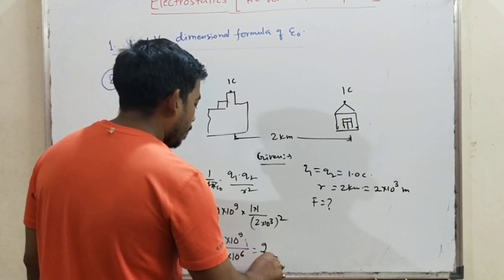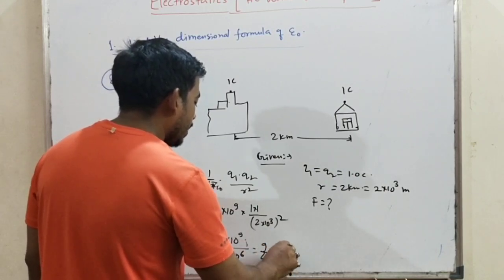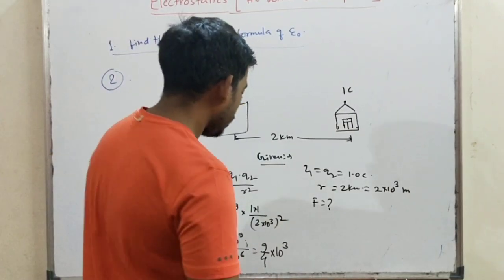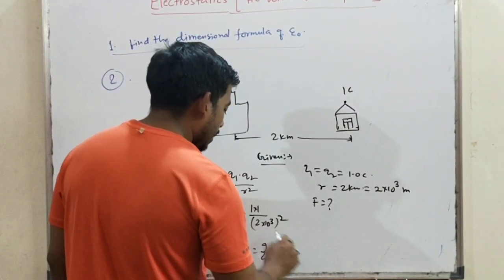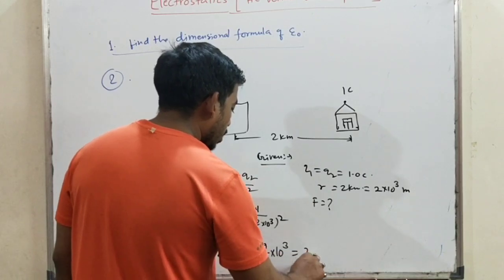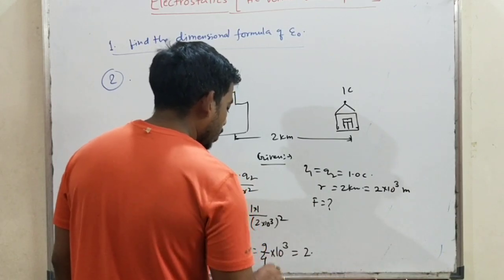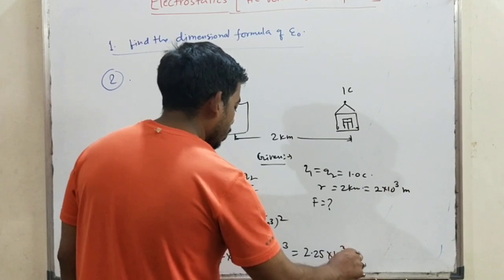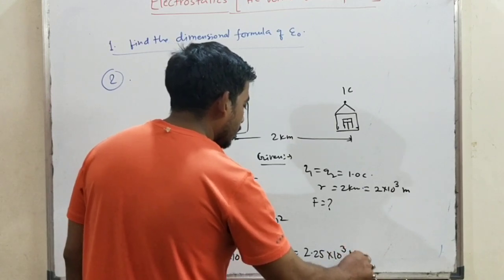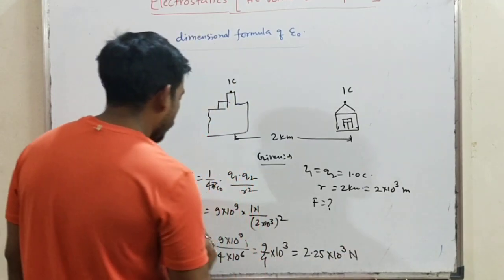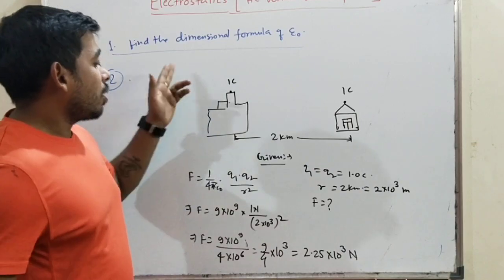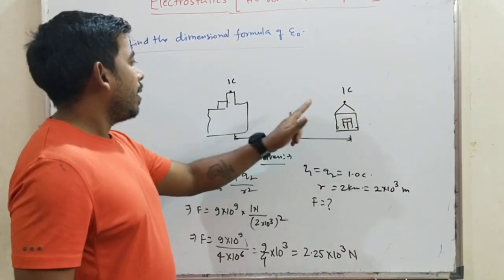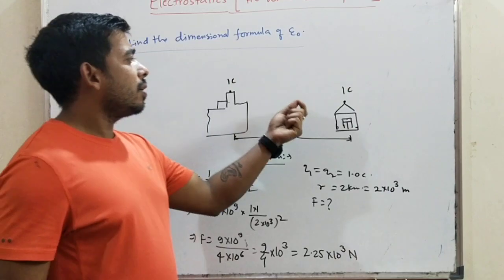Calculating: 9 upon 4, into 10 raised to the power 3. If we calculate: 4×2 = 8, so 2.5 × 10³ Newton. Here is your force for the charges on top of your college building and your house.